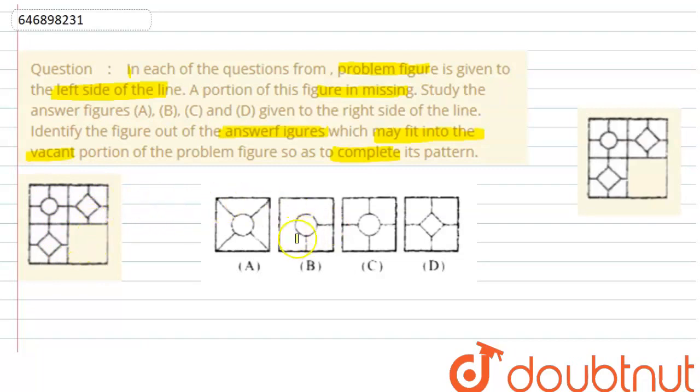So you can see it's option A, B, C, or D. So for ease, I have redrawn this. You can see that this portion is incomplete. Fine. So we'll complete this.